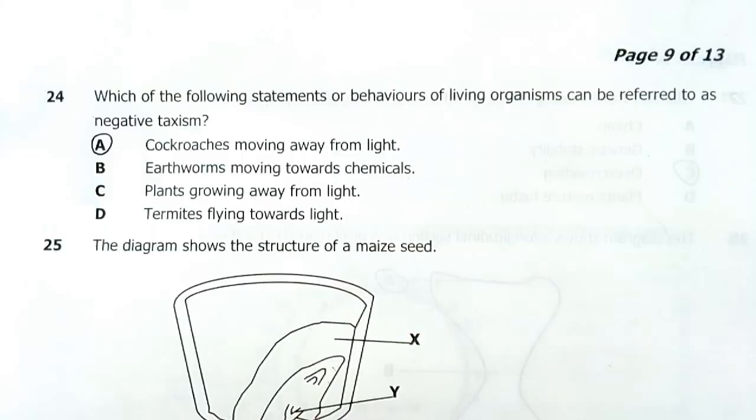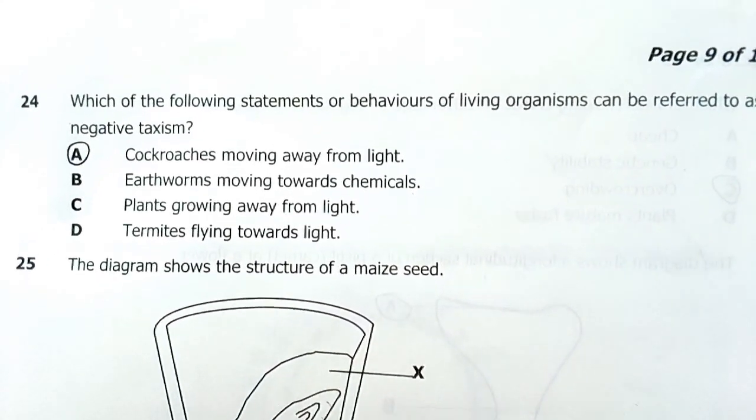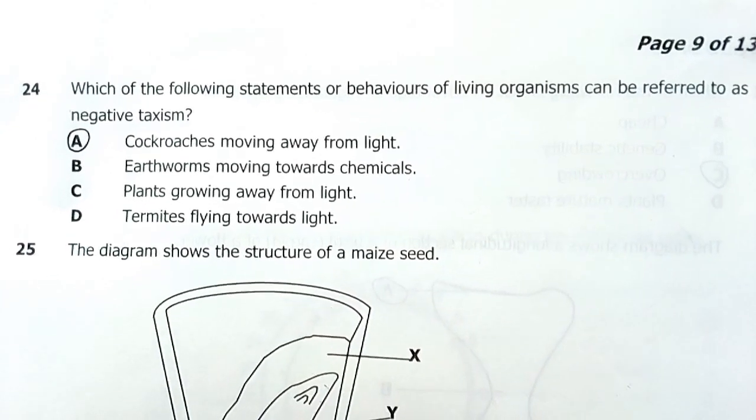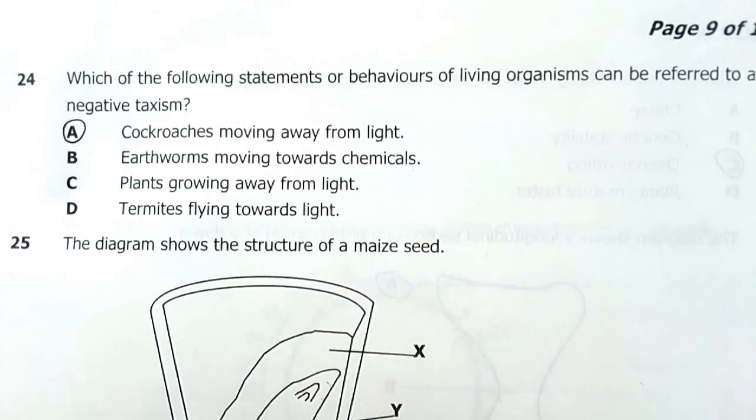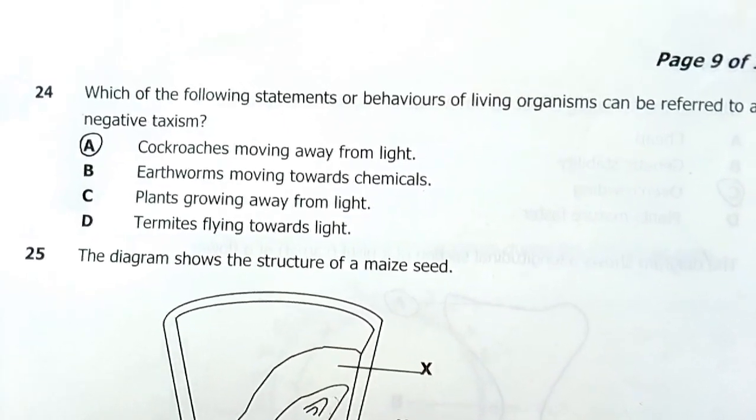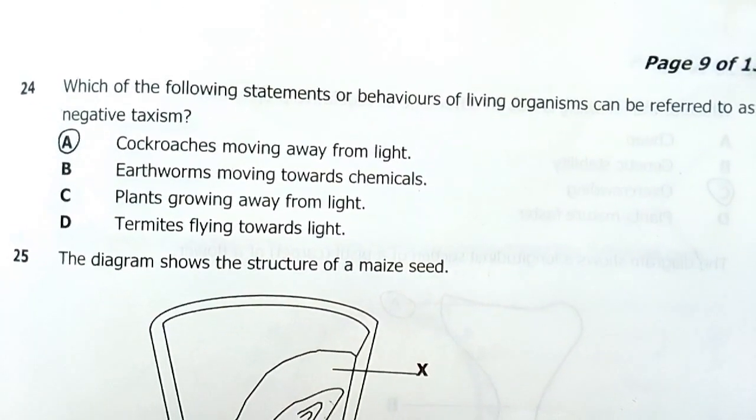We'll move on to question 24. Which of the following behaviors of living organisms can be referred to as negative taxism? These are responses to stimuli in animals. A, cockroaches moving away from light. That's negative taxism.